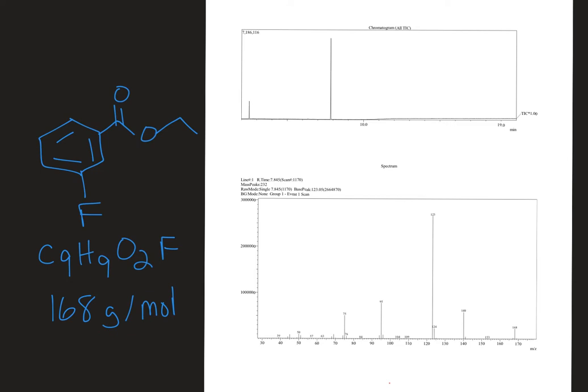So GC-MS is two instruments interfaced to one another. The GC stands for gas chromatography and that works to separate out components of a mixture. This is handy because often we have a complex mixture and we want to get a mass spectrum for each individual component so that we can easily analyze them.